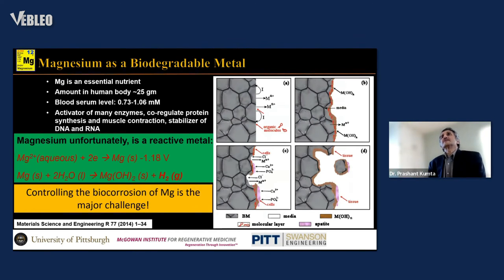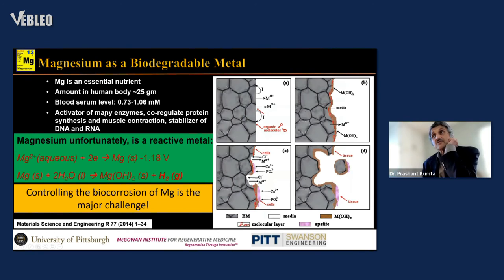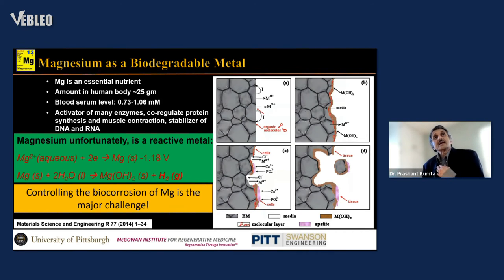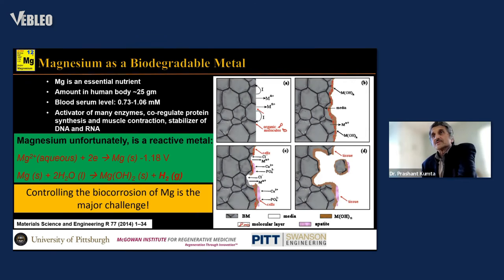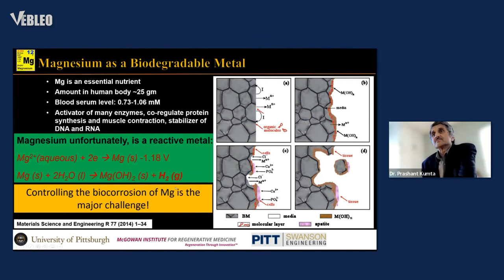Magnesium is a good biodegradable metal and an essential nutrient. The amount present in the human body is about 25 grams, with a blood serum level of around 0.73 to 1 millimoles. It is an activator of many enzymes, co-regulates protein synthesis and muscle contraction, and stabilizes DNA and RNA. Unfortunately, it is a reactive metal and undergoes hydrolysis rapidly upon contact with water, generating hydrogen. If hydrogen exceeds the solubility of blood, it can cause gas pockets and necrosis, so controlling the biocorrosion of magnesium is the major challenge.